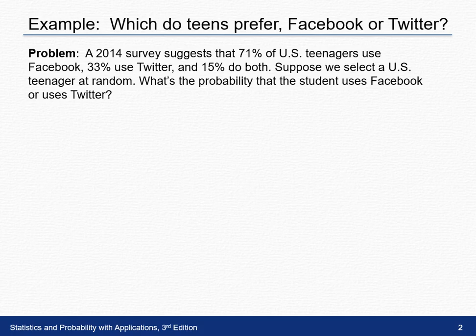In 2014, a survey suggests that 71% of US teenagers use Facebook, 33% use Twitter, and 15% do both. Suppose we select a US teenager at random — what's the probability that the student uses Facebook or Twitter?